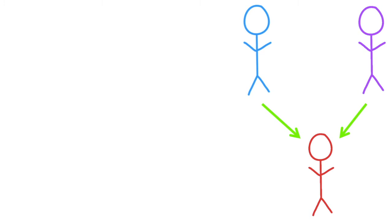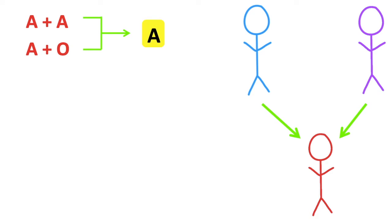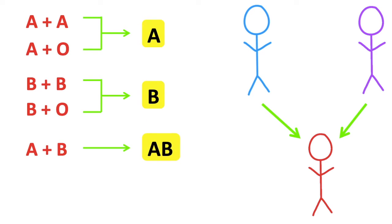Our blood group is determined by what we inherit from our parents — we inherit a copy from both parents, and this is where the four groups originate from. Blood type A and B alleles are dominant, while type O is recessive. So if you inherit AA or AO you will have type A blood; BB or BO gives type B blood; inheriting A and B gives type AB; and inheriting OO gives type O blood.